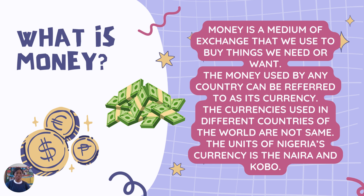Money is a medium of exchange that we use to buy things that we need or want. What do we mean by a medium of exchange? Let's assume you want an ice cream. You go over to where you can get an ice cream, you see the ice cream you want, and then you check out the price. You give them money and in exchange they give you ice cream. So you give them money, they give you what you need. So money is a medium of exchange that we use to buy things that we need or want.